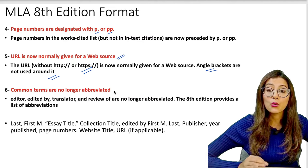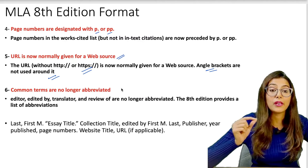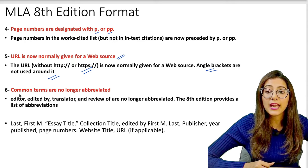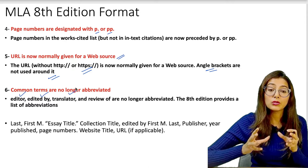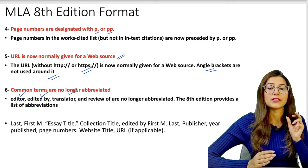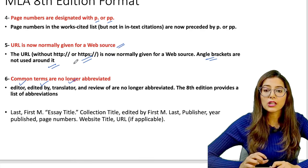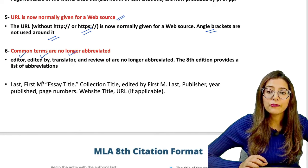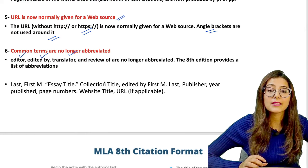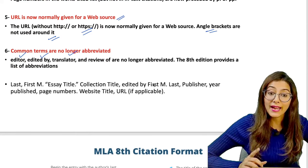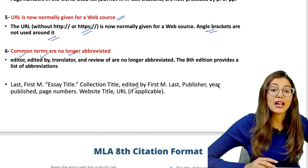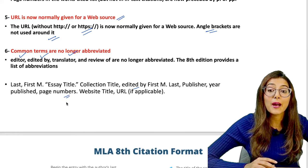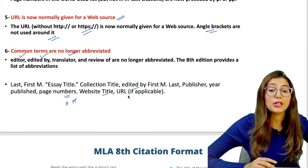Common terms are no longer abbreviated in the 8th edition. Terms like 'editor' will appear as 'edited by' and 'translator' will appear in full — these common terms are written in full form, not abbreviated. The format is: last name, first name, period, then parenthesis, collection title, edited by, first name, last name, publisher, year, page number (P or PP), website, URL without HTTP.